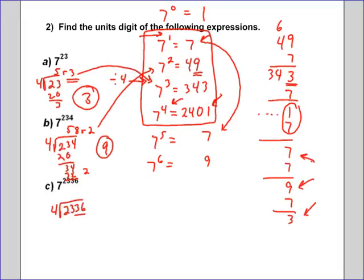When you're dividing by 4, all that matters are the last two numbers. 2300 is divisible by 4. Every 100 is divisible by 4. So if I just worry about 36, 36 is actually divisible by 4. And I told you when you have no remainder, that is the 7 to the 4th. So the units digit is 1. So the units digit of the first one was 3. The units digit of 7 to the 234th was 9. And the units digit of 7 to the 2336 is 1.